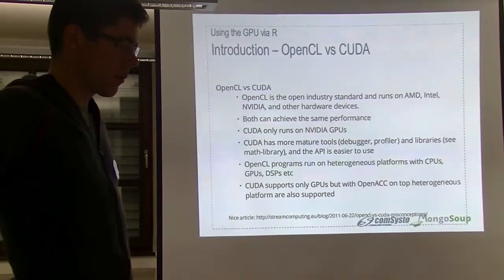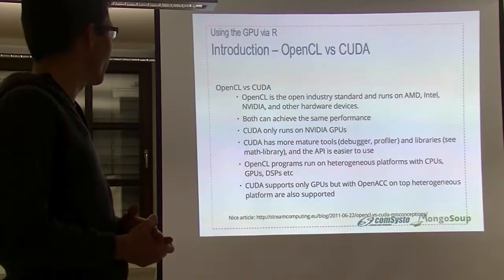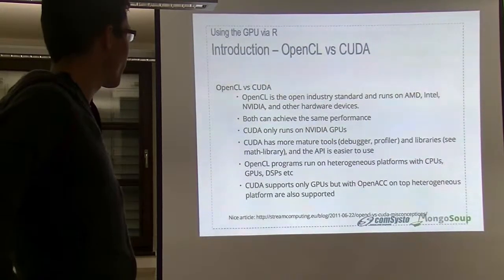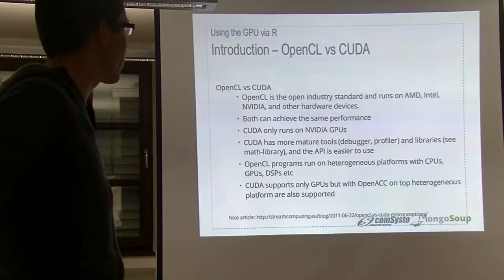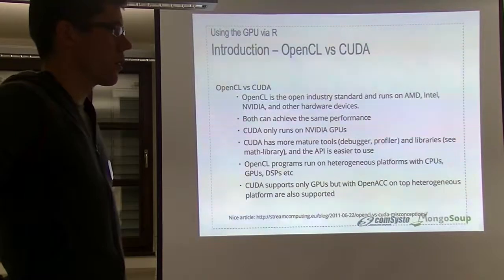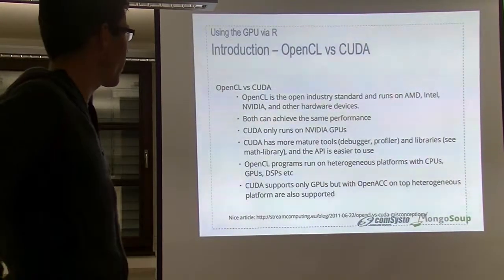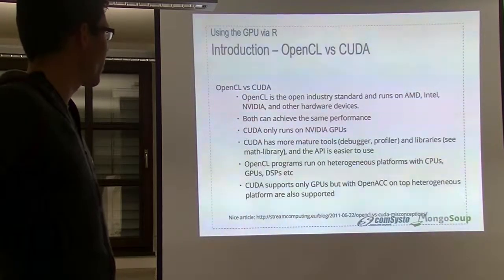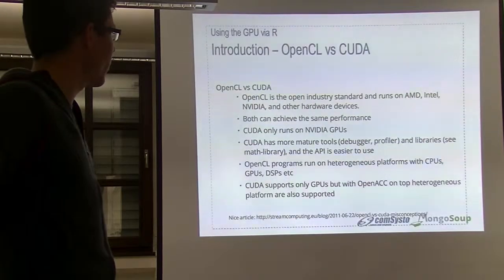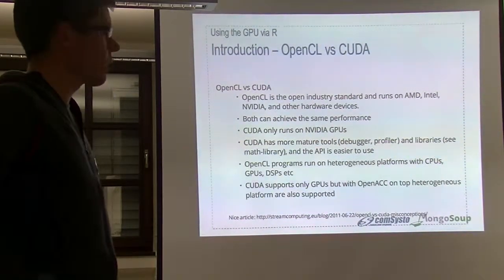CUDA is one API from NVIDIA, so it runs only on NVIDIA graphics cards. But there is an open standard called OpenCL, developed by AMD and NVIDIA. It can achieve the same performance, but CUDA has more mature tools like profiling, debugging, and easy-to-use APIs, which is why it's used more often. OpenCL will likely catch up with CUDA sometime, but currently CUDA is more popular.